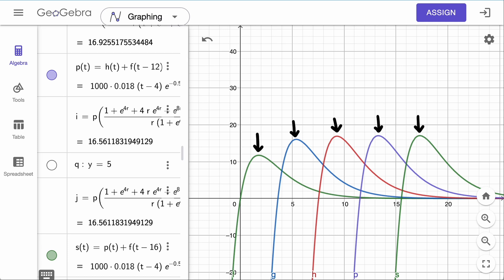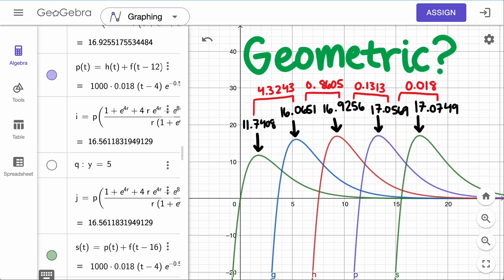First, we might be able to use our tools from a geometric series to be more confident in this claim. I've listed the five peak values from our curves in GeoGebra, and I found the differences, which was what we looked at in the previous model with half-lives. Are these values approximately geometric?